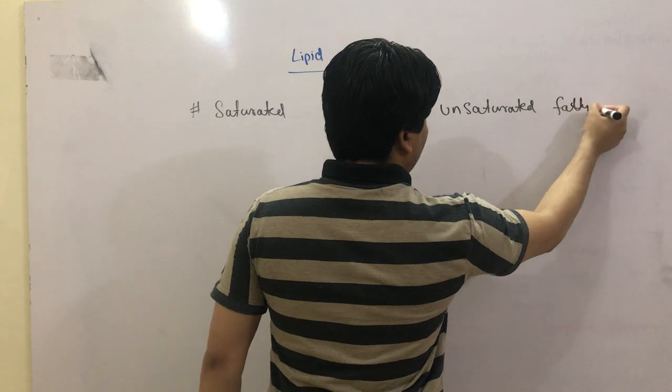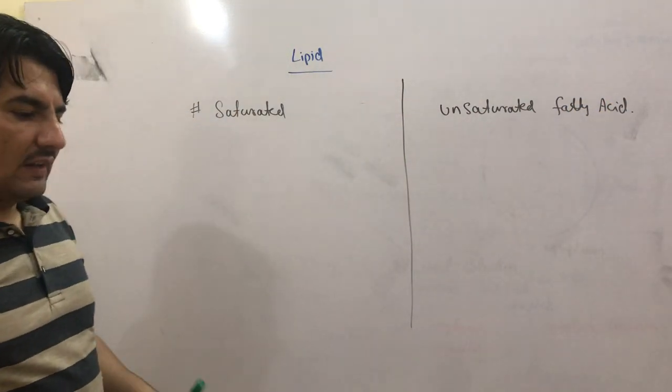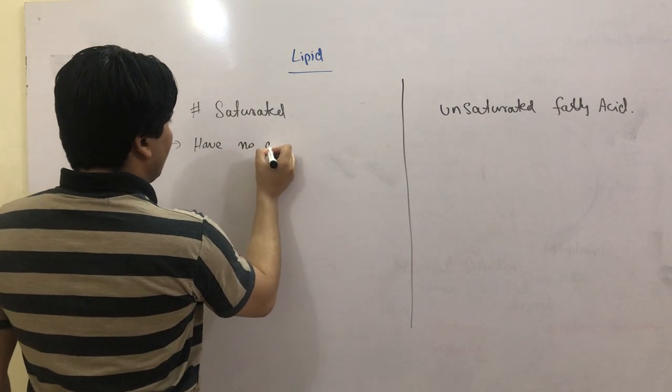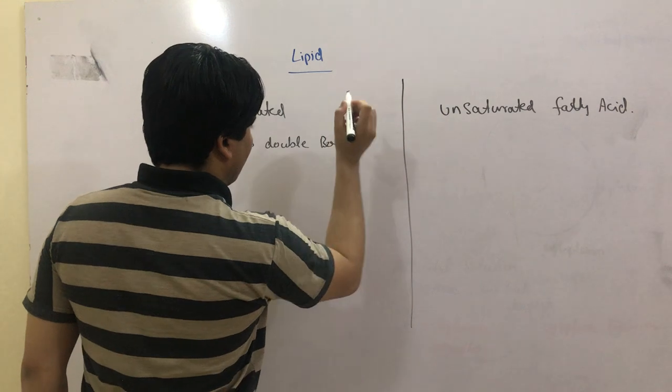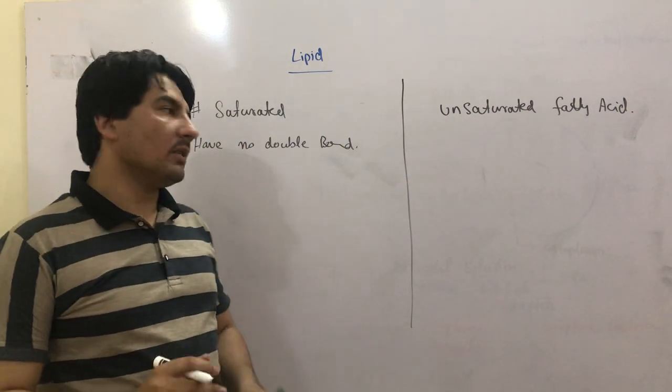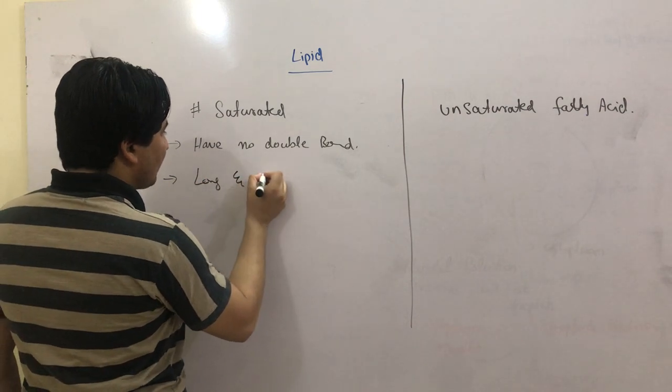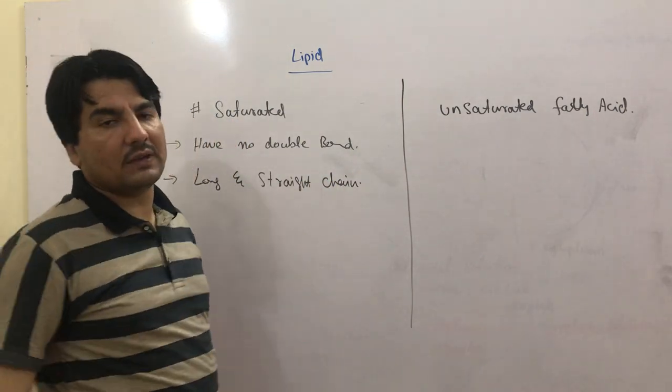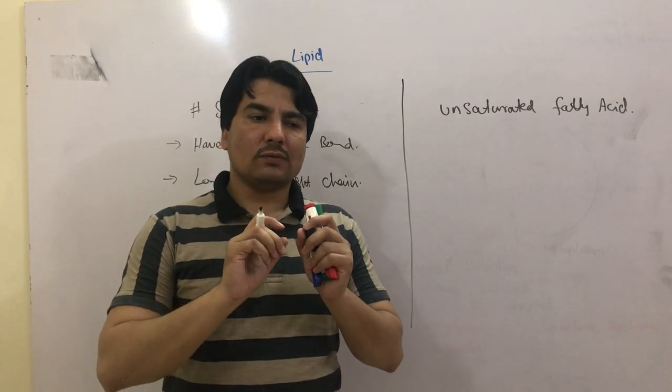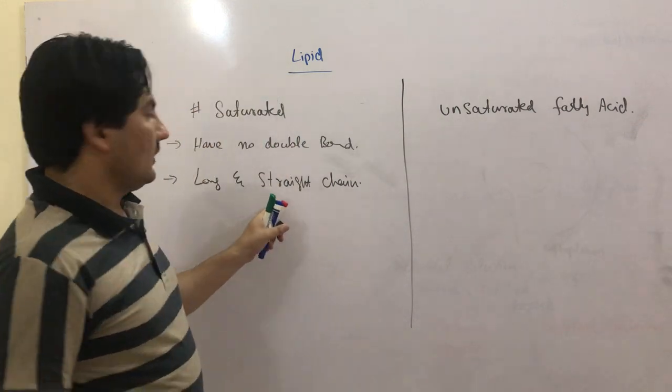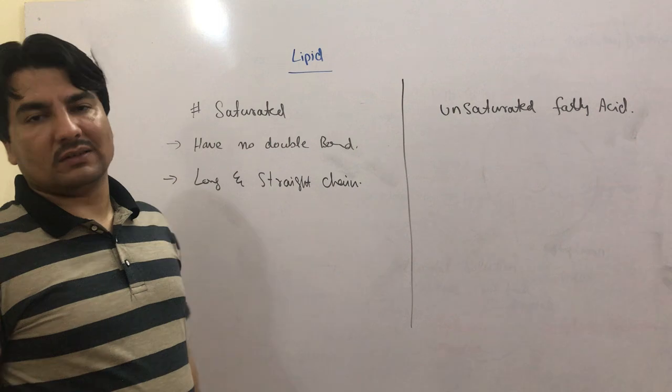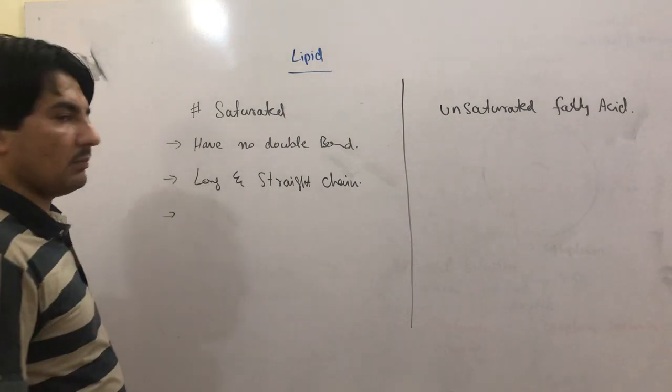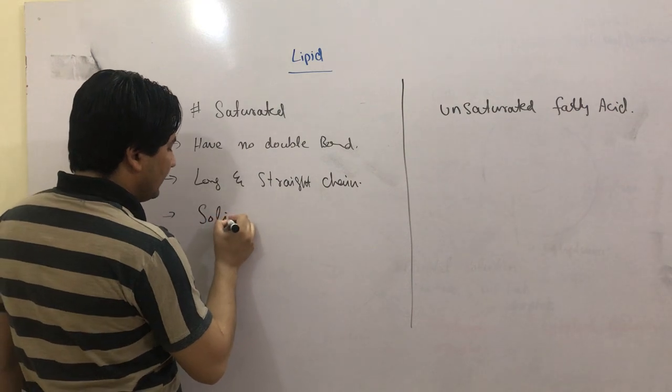Saturated fatty acids have no double bond between the carbon atoms, which means there are no double bonds. This is a long straight chain. When there is no double bond in the fatty acid chain, it remains straight. These can be solid at room temperature.